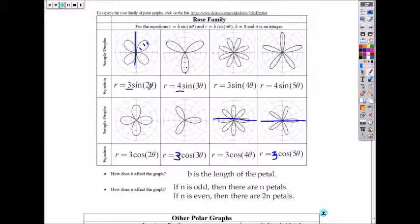And for n, if you have an odd number, then you have n petals. So if you have three, which is odd, you have three petals. Three again, three. If it's five, you have just five.